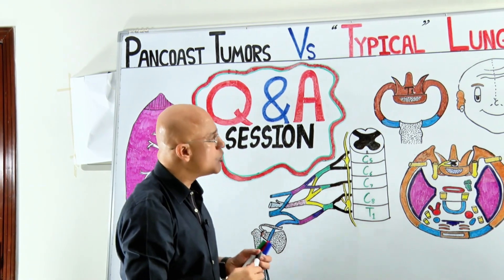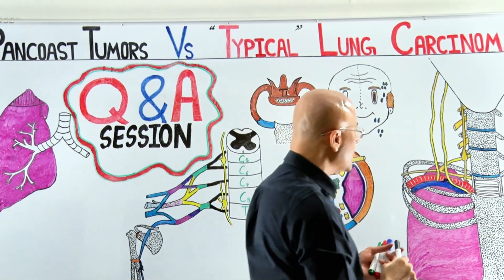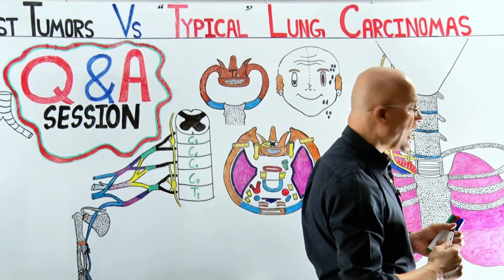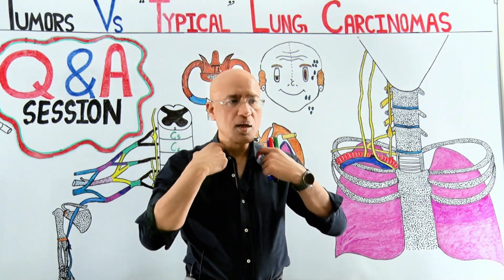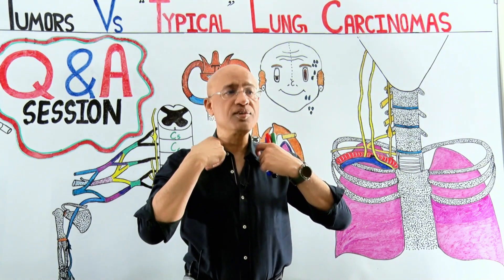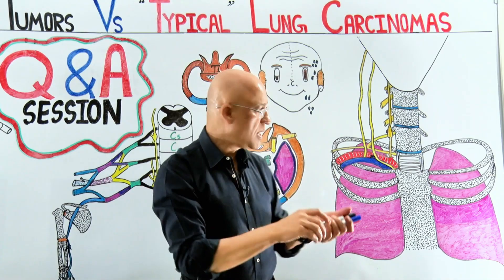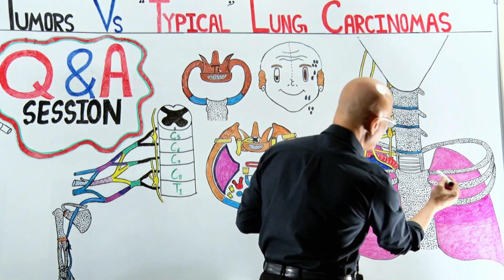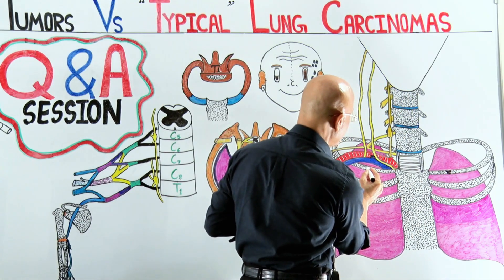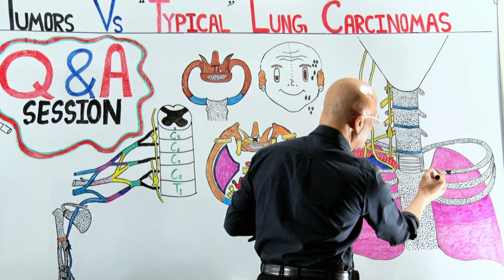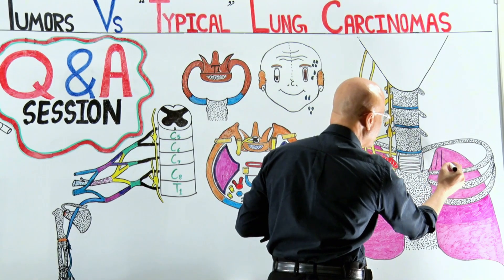How do we define the apical part of the lung? The apical part of the lung is that part of the lung — the top of the lung — which is above the first rib. Here we have the first rib, and this part of the lung which goes above the first rib, we call it the apical part of the lung.